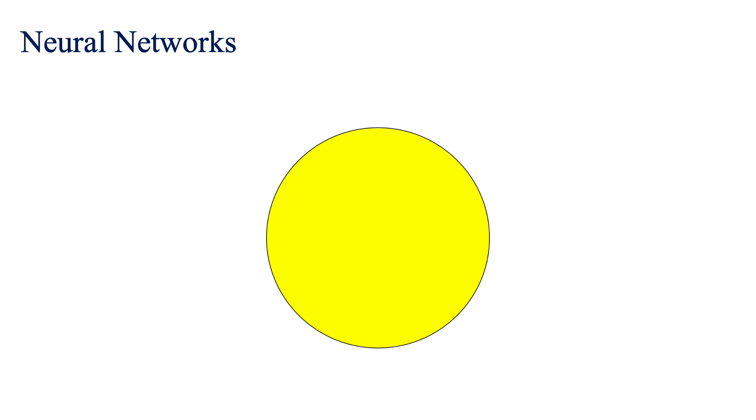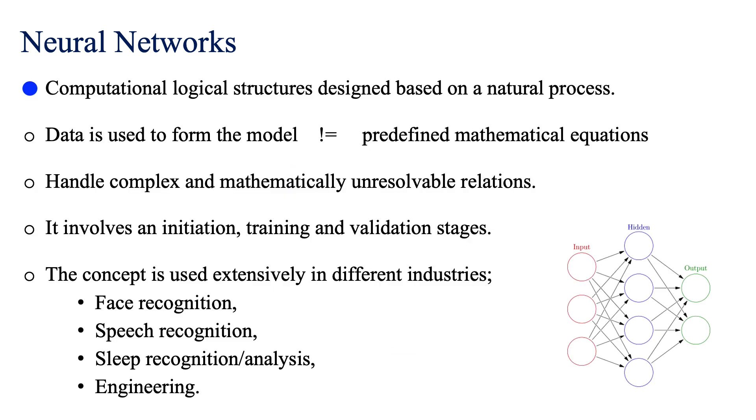From that point forward, whenever we are seeing a yellow circle, we immediately realize that that is a yellow circle. We do the same thing in case of neural network.